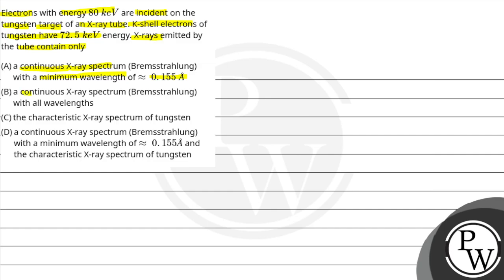Option B: a continuous x-ray spectrum with all wavelengths. Option C: characteristics x-ray spectrum of tungsten. Option D: continuous x-ray spectrum with a minimum wavelength of 0.155 Angstrom and characteristics x-ray spectrum of tungsten.